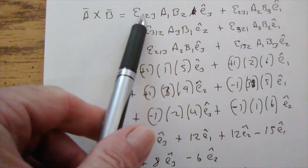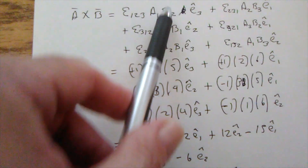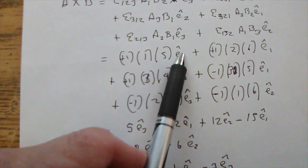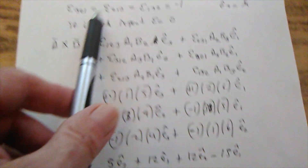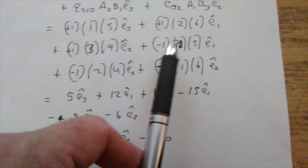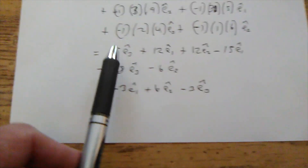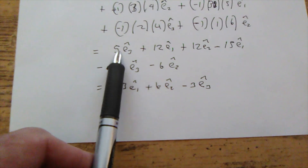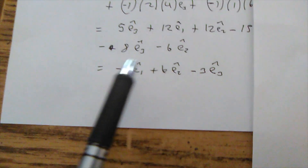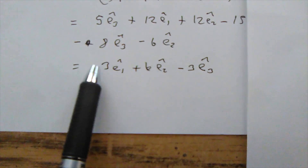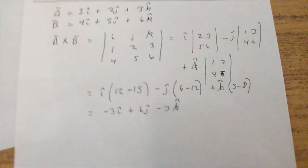Then you go back to the vectors I made up and plug in the values. So epsilon_1,2,3 is +1, a_1 is 1, b_2 is 5, times e_3-hat. You write that down as your first component. You do that for each of the six terms — three positives and three negatives. You multiply all that out, gather up your e_1, e_2, e_3 terms, and look what you get: the same answer. Remember e_1 is i, etc., so you get -3i + 6j - 3k. It works.